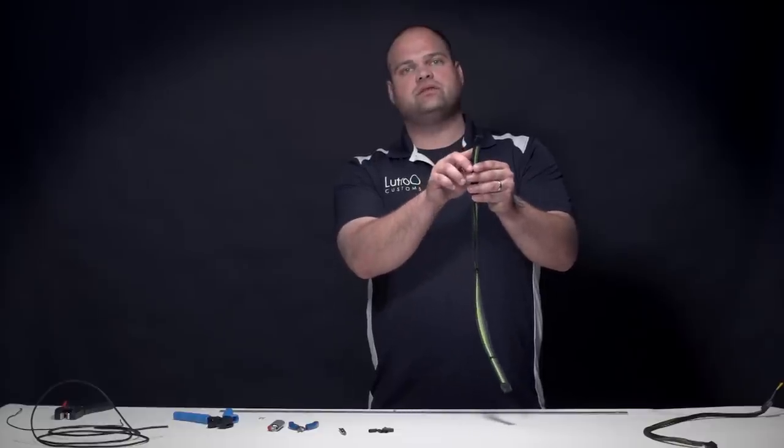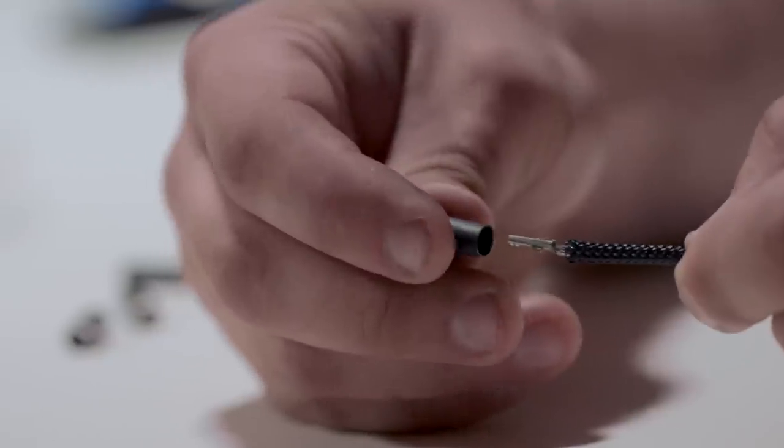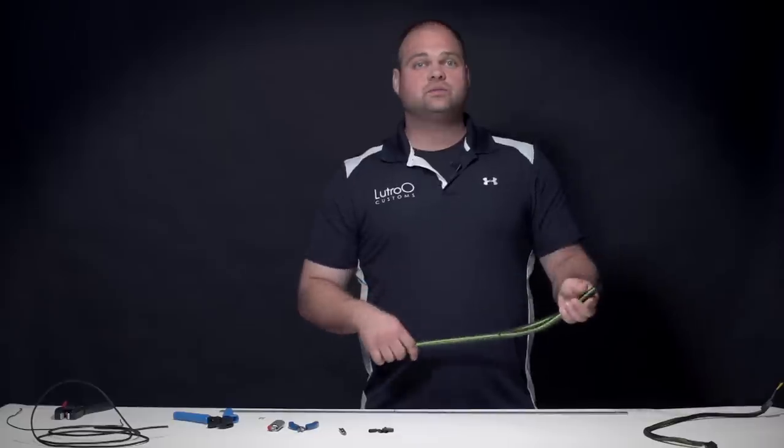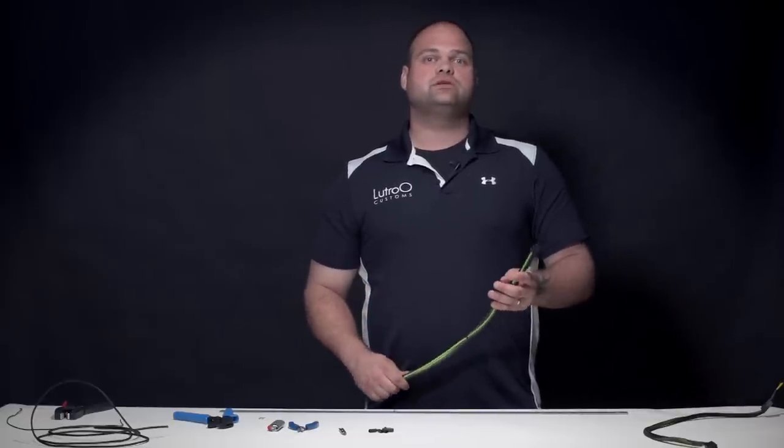There's a few different methods for sleeving cables. There's heat shrinkless and then there's heat shrink style. Heat shrinkless is basically not having any heat shrink on the end and the wire goes directly into the connector. Heat shrink style uses little pieces of heat shrink that go into the connector and they actually hold everything together. I'm not going to be going over the heat shrink style, but you can check that out on my own YouTube channel.